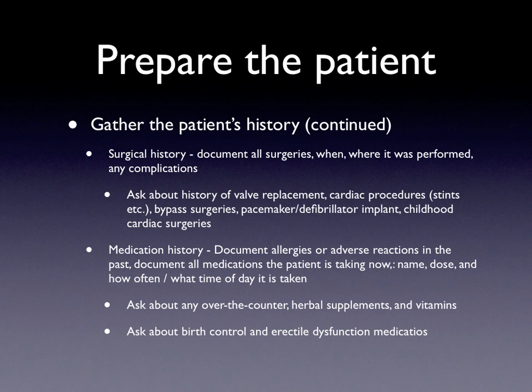As we continue to gather the patient's history, we'll need to talk about surgical history and document all surgeries — when, where performed, and any complications. Ask about a history of valve replacement, cardiac procedures such as stents or balloon angioplasty, bypass surgeries (also known as CABGs), pacemaker or defibrillator implants, and any childhood cardiac surgeries. It's important to know these because they may change what their normal EKG will look like.